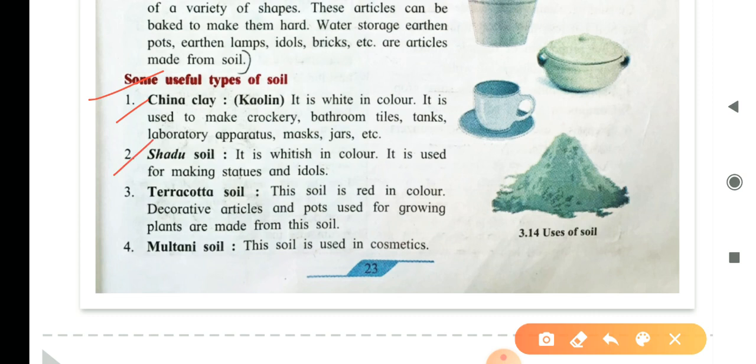Second is, shadow soil. It is whitish in color. It is used for making statues and idols. Third, terracotta soil. This soil is red in color. Decorative articles and pots used for growing plants are made from the soil. Multani soil. It is used in cosmetics.